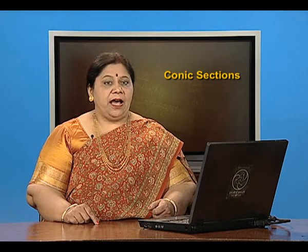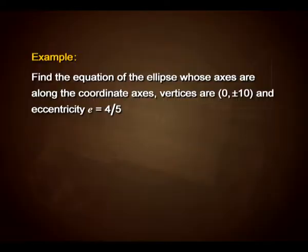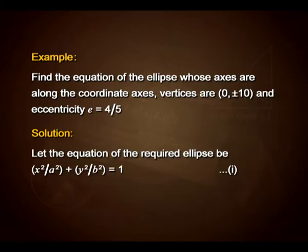Here we have another example. Find the equation of the ellipse whose axes are along the coordinate axes. Vertices are 0 comma plus or minus 10 and eccentricity e equals 4 upon 5. Let the equation of the required ellipse be x² upon a² plus y² upon b² equals 1. Take this as equation number 1.